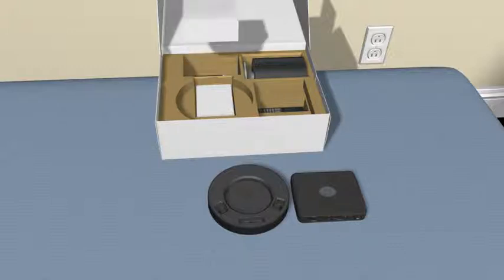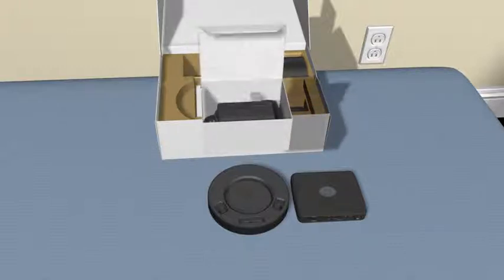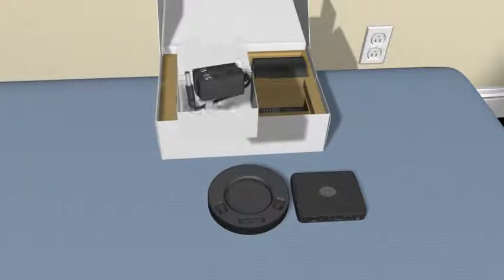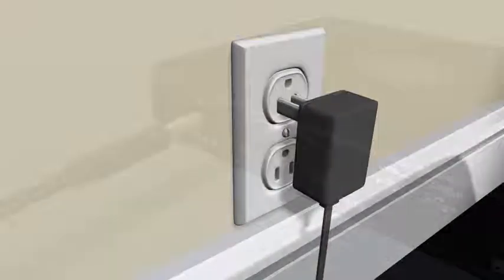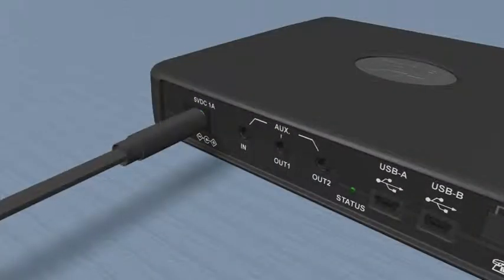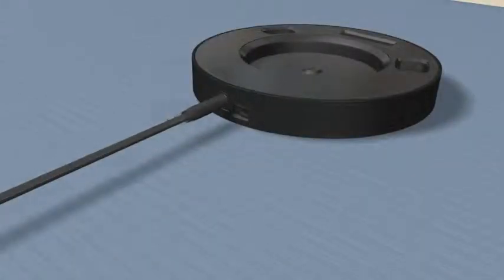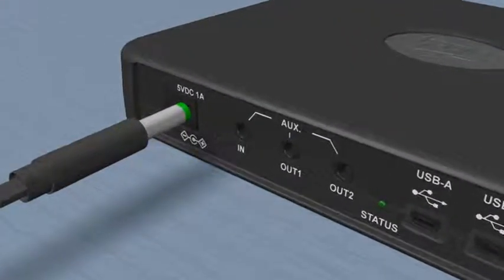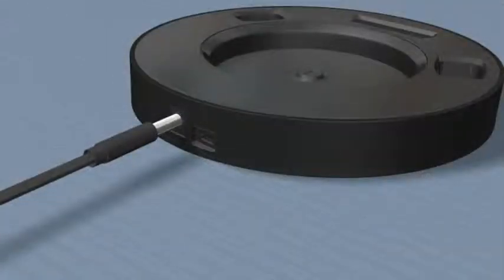Next, take the two power supplies out of the box and unpack them. The power supplies might either be in a small carton of their own or in a plastic bag. There are two different power supplies, one for the base station and the other for the charger base. The power supply with the green ring or band goes into the base station.